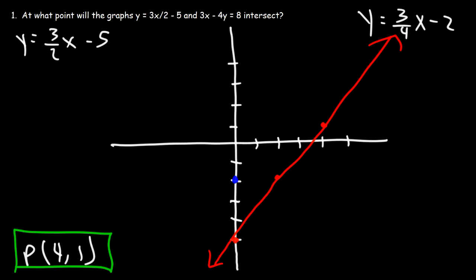So the y-intercept is negative 2. And then let's use the slope 3 over 4 to get the next point. So let's go up 3 over 4. So that's going to take us to the point 4, 1. So we can clearly see that it's the point of intersection. So that's another way in which you can basically graph or find the point of intersection. You can solve by substitution as a system of equations, or you can just graph it and find the point of intersection. Thanks for watching.